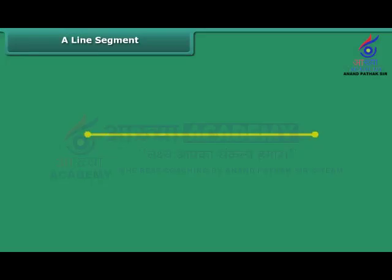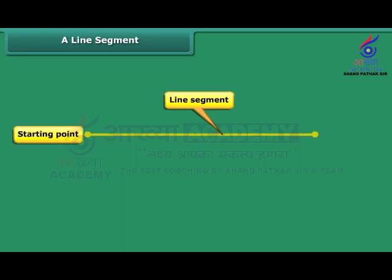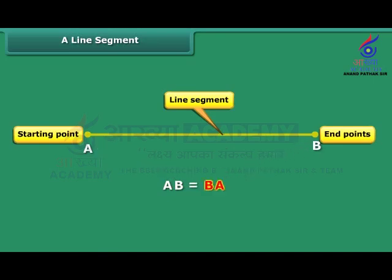The shortest distance between two points is known as a line segment. The starting and ending of a line segment are its end points. A line segment can be named by naming its end points. We can call this line segment AB or BA.